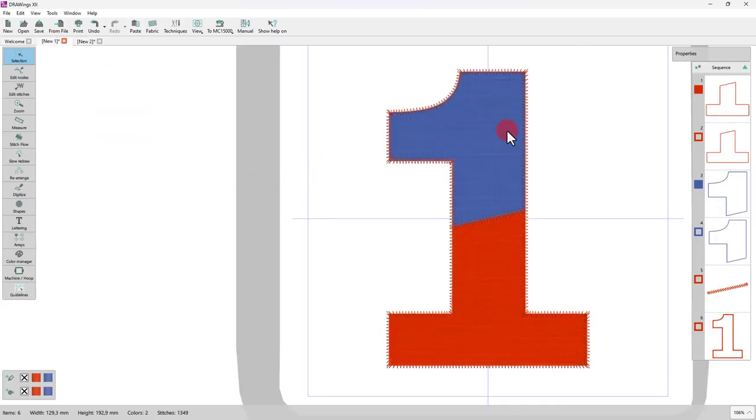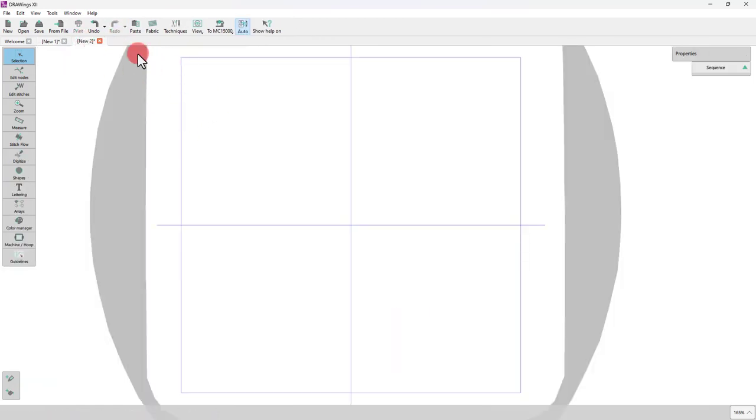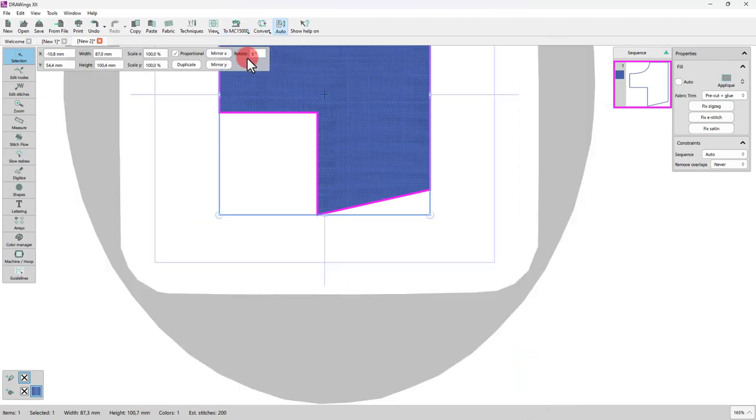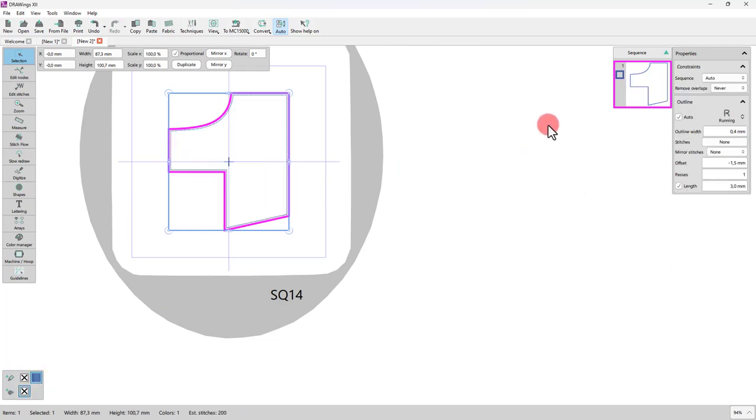From the initial design, select the upper applique part, copy and paste it into this new design. Center it to the hoop. Remove the fill color and set its outline to cutwork.